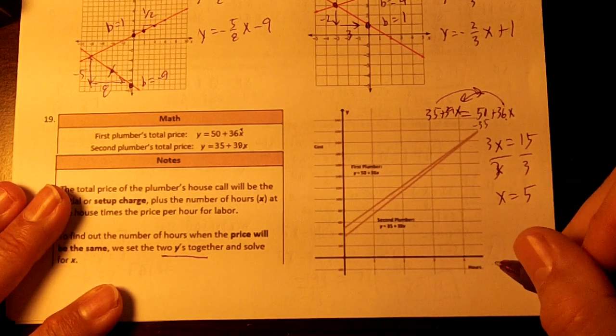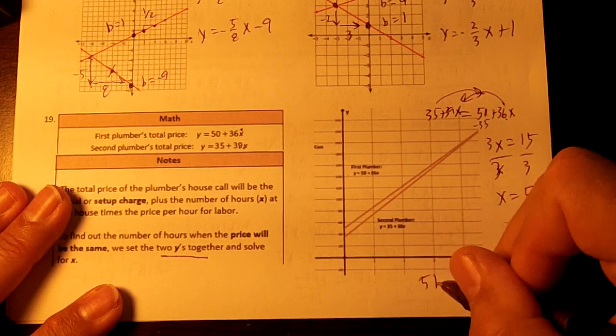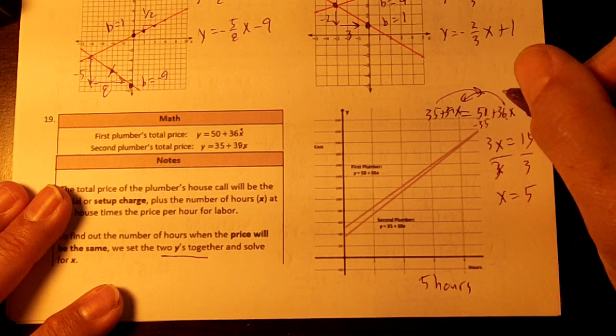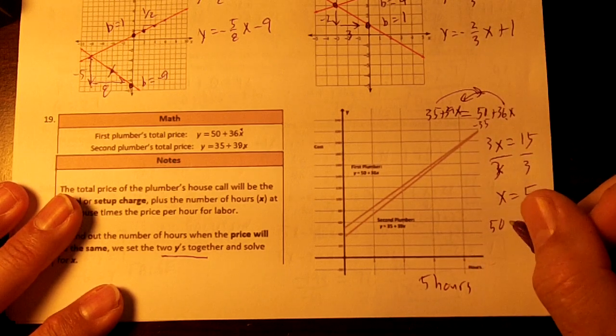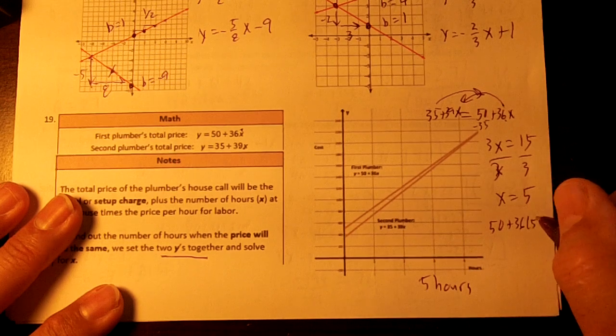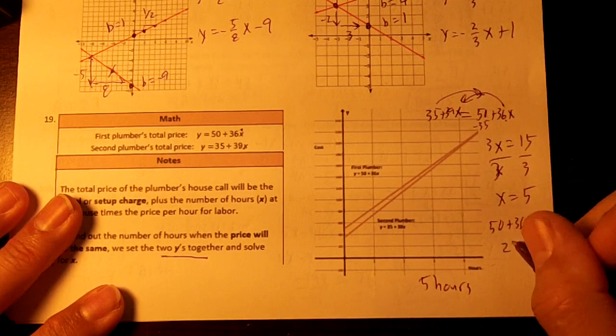So at 5 hours, and then just put 5 in one of them. Let's put 5 in this one. 50 plus 36 times 5, that's going to be 180, so $230.